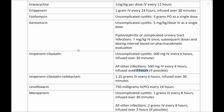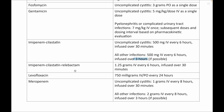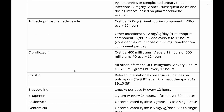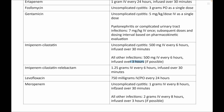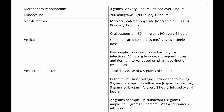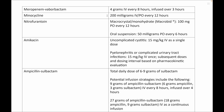For most complicated cases, it is always better to infuse beta-lactam agents over 3-hour extended infusions. Regarding levofloxacin, give 750 mg once daily. For meropenem, for all infections, give 2 grams IV every 8 hours with a 3-hour infusion. Minocycline: 200 mg IV BD.